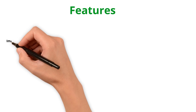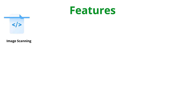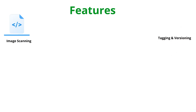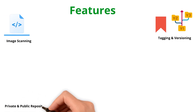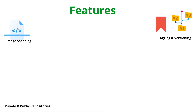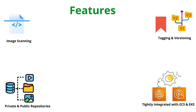Some of the features of ECR are: image scanning to find vulnerabilities in the Docker image; tagging and versioning to find and rollback to a specific version, which can be really useful; and the ability to make the repository public or private. This ECR service is also tightly integrated with ECS and EKS.